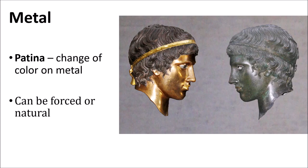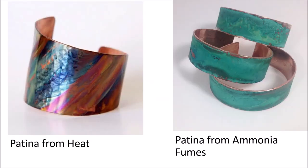Rust is another example of nature changing the color of metal, and some artists will either force that or just wait for it to happen. One thing you might do to change the color of metal is to use heat. If you see a metalsmith with a beautiful copper bracelet showing rainbow colors, that is a heat patina — they just heated up the metal and at a particular temperature it starts shifting in color. To preserve it, they have to cover the copper with a protective coating, because otherwise the copper will continue to react with the air and the colors will go muddy.